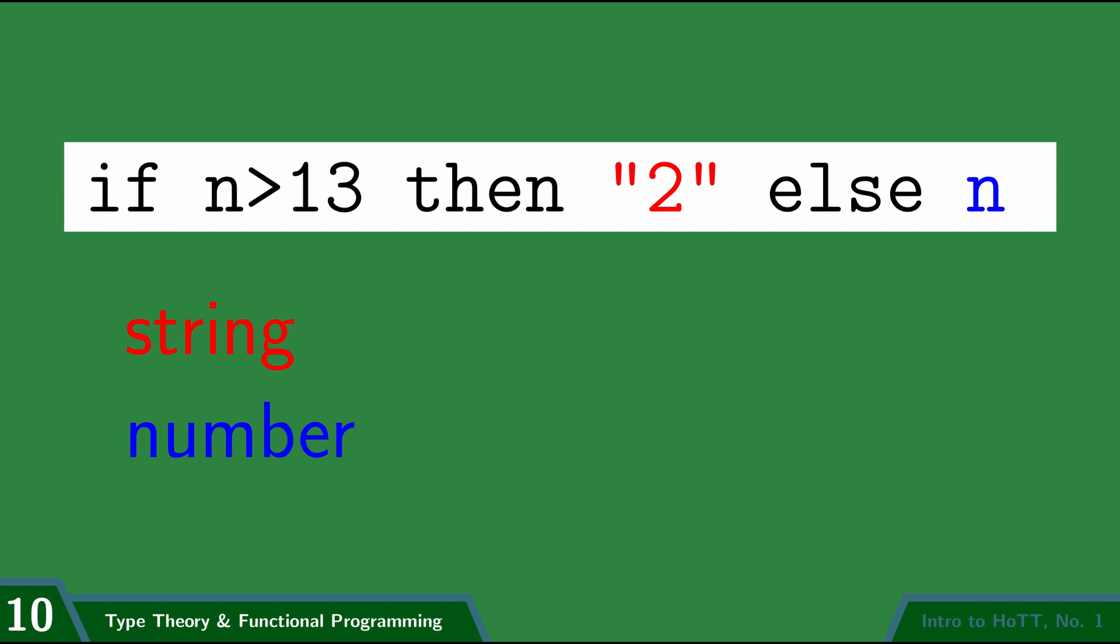So if you're computing a single value from this piece of code, that value will be a string if n is greater than 13, and a number otherwise. So there's no consistent type we can assign to this expression as a whole. We saw that if we allow this, it can cause bugs.